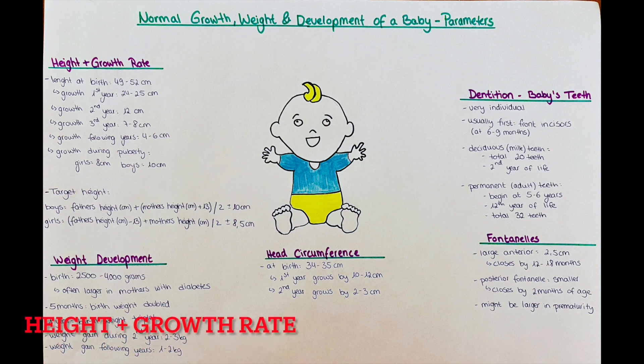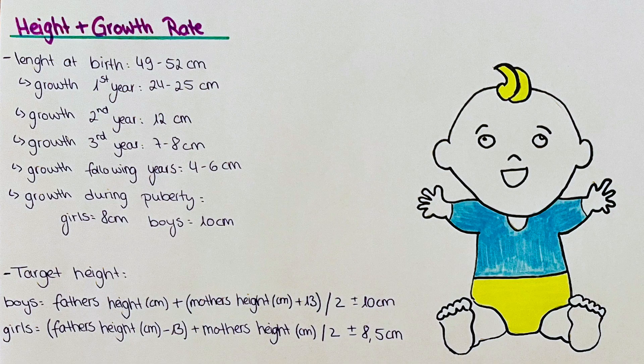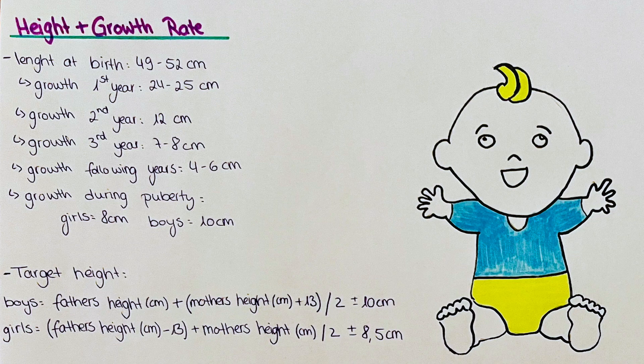So let's start with the height and growth rate. The length at birth when a baby is newly born is around half a meter. To be exact, it's 49 to 52 centimeters which is considered the normal range.